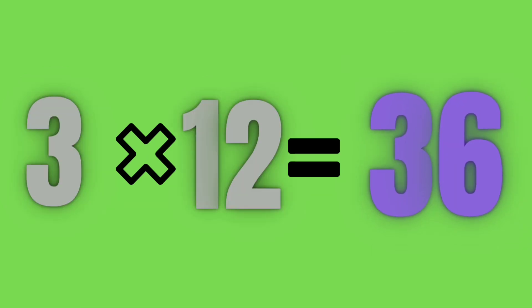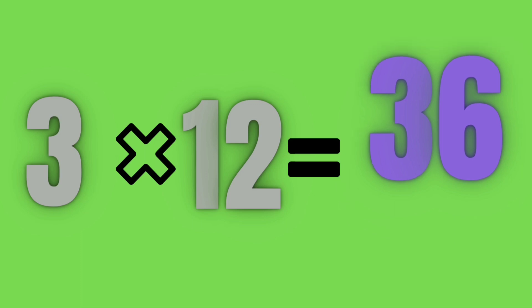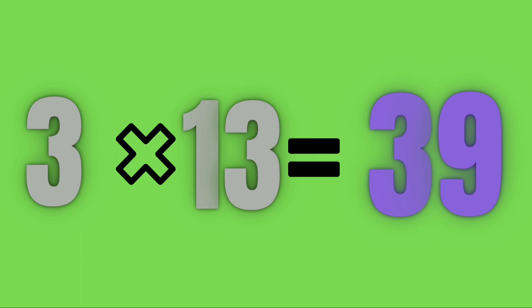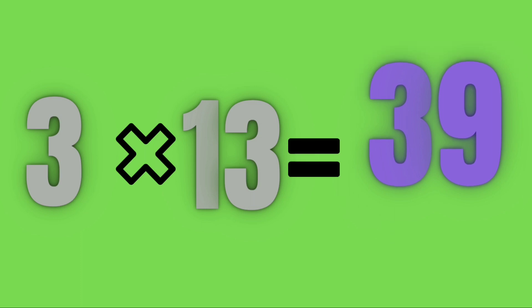Three twelves are thirty-six. Three thirteens are thirty-nine.